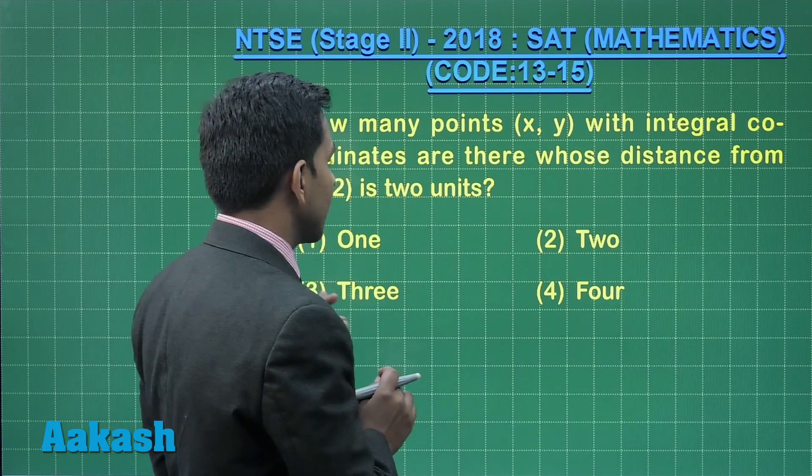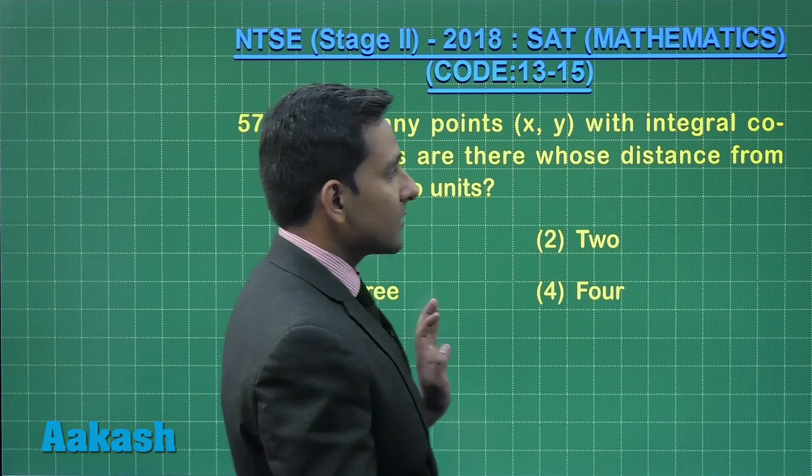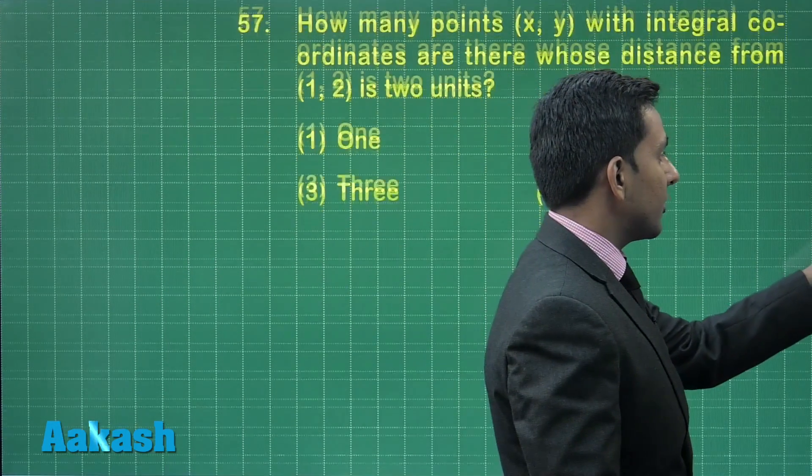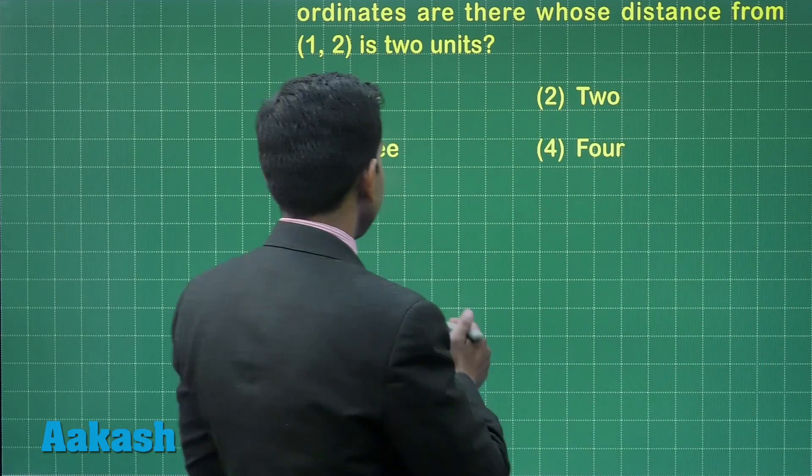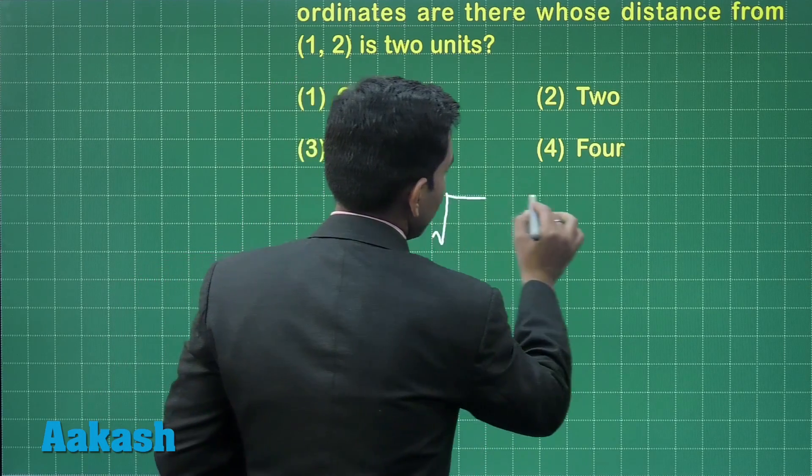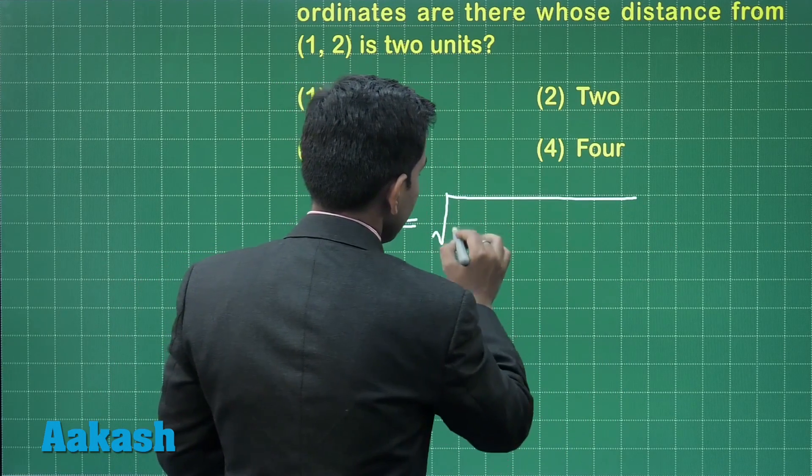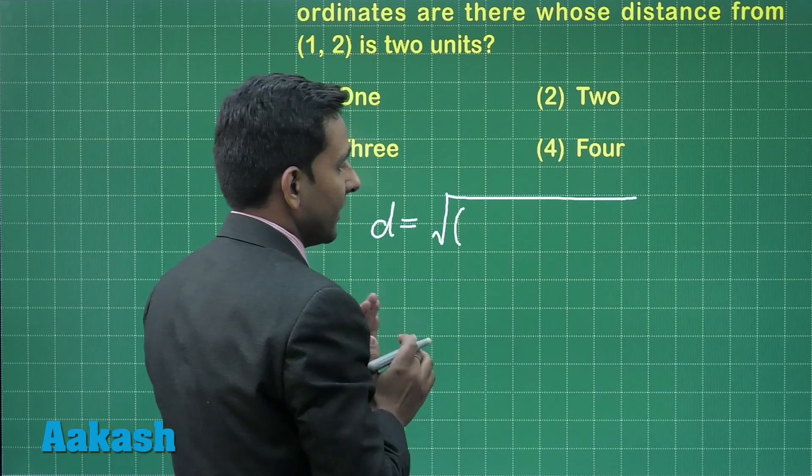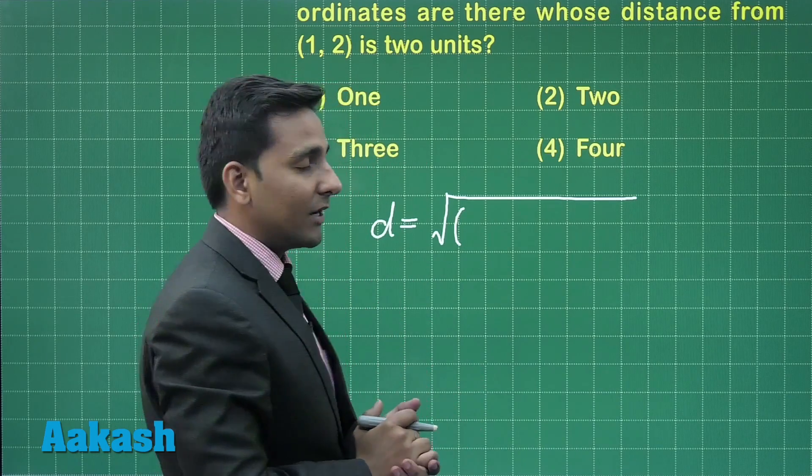The distance between two points is given which is 2 units. We can relate the distance between two points using the distance formula: d equals square root of (x1 minus x2) squared plus (y1 minus y2) squared.